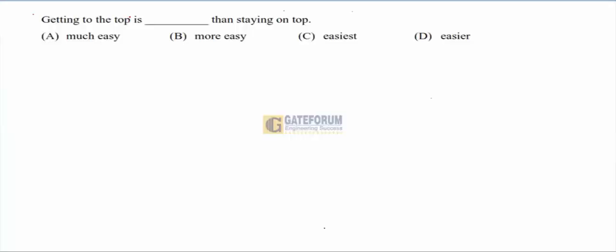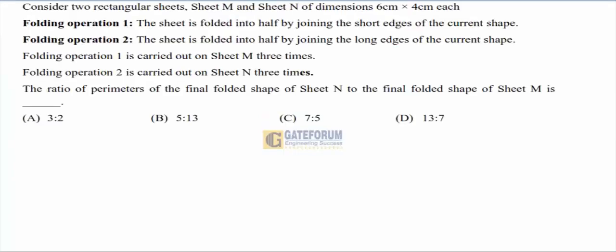This is the General Ability part of the Instrumentation GATE 2021 paper. Let us solve it. First one: 'Getting to the top is easier than staying on top' — that is the correct option.